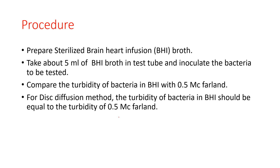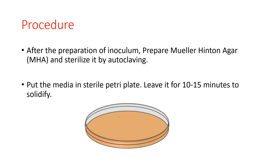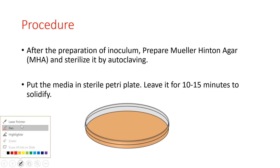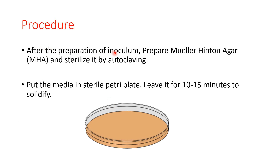The first step is to prepare the inoculum in the brain heart infusion broth. After that, prepare the Mueller Hinton agar — sterilize it by autoclaving, then pour the media into a sterile petri plate and leave it for 10 to 15 minutes to solidify. Complete solidification is necessary because during streak culture, pressure will be applied and the media may crack if not fully solidified.